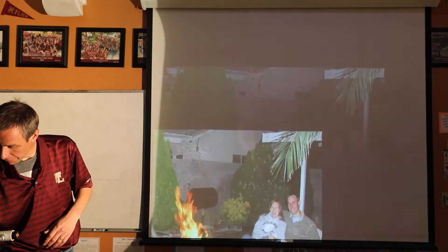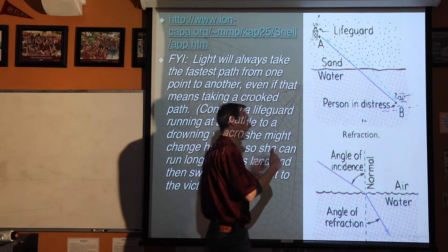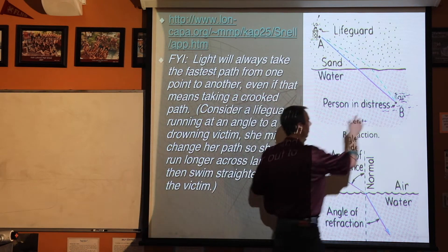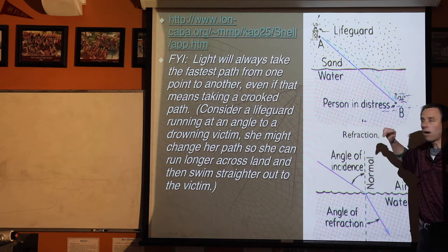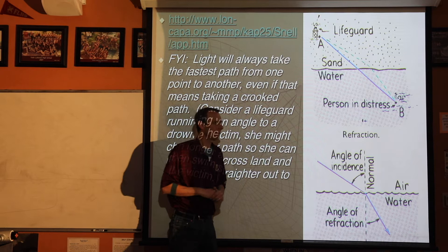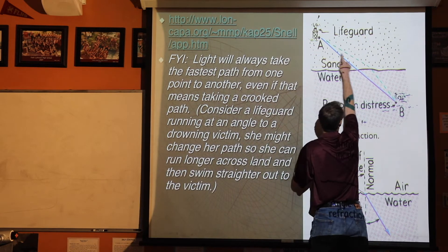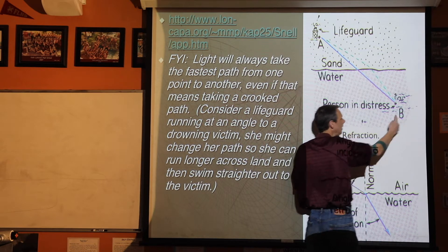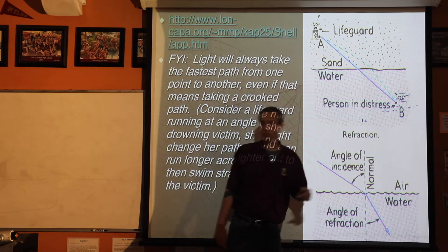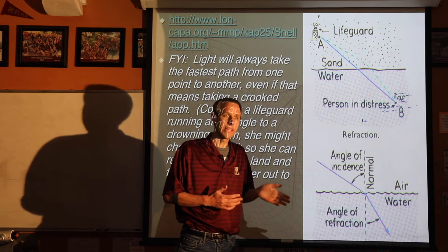Here's another example of refraction — an analogy. We have this lifeguard who needs to get to a distressed swimmer. Shouldn't the fastest route be a straight line? Normally, yes. However, the lifeguard runs faster than he swims. So what would actually be better is to spend more time on land, run out farther, and then cut in and do less swimming — more running, less swimming. It turns out to be a faster route. That's not exactly why light does it, but it gets snagged on the new medium is why.